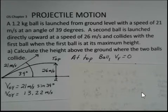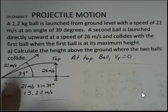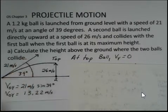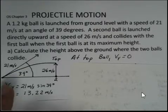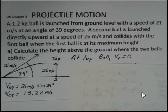In this example problem of projectile motion, we're given information about the launch of ball one at 21 meters per second at an angle of 39 degrees above the ground. This ball tracks a parabola, reaches the top of its motion, the highest point.